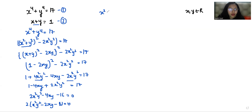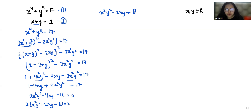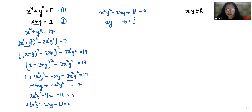So x²y² − 2xy − 8 = 0. This is a quadratic equation in terms of xy. We will apply the quadratic formula: xy = (−b ± √(b² − 4ac)) / 2a.